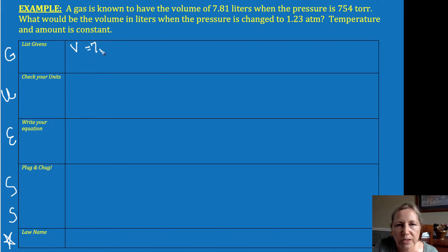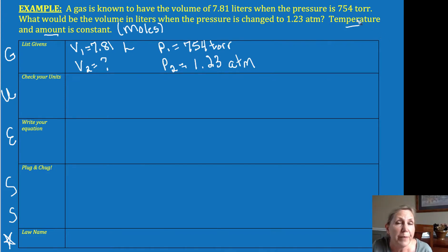We have a volume equal to 7.81 liters. A pressure at that volume is 754 torr. My next line says what would be the volume, so now I know I'm having a change. So I want to label those variables when my pressure is changed to 1.23 atmospheres. So I have listed my givens. The question explicitly says temperature and amount or moles are held constant. If it doesn't explicitly say, you have to assume that they were held constant since they don't tell you about the changes. So now we want to check our givens.